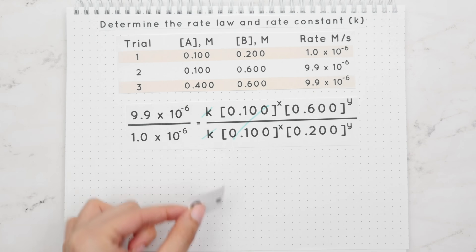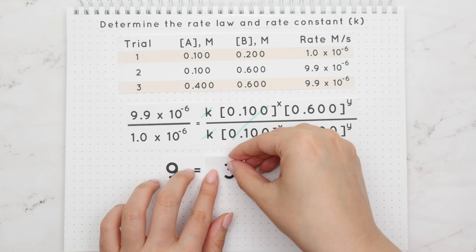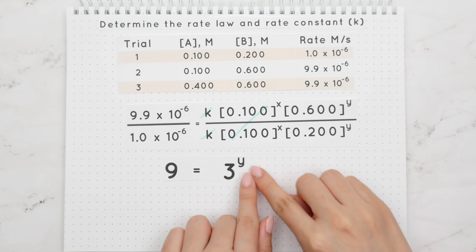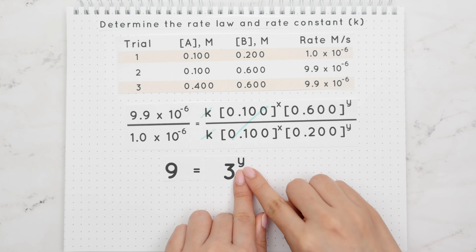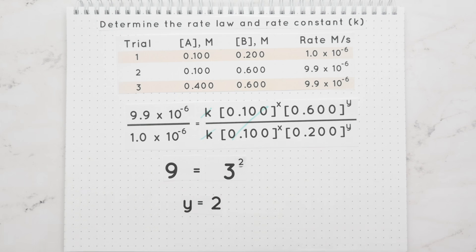When we divide the left side we get 9, and when we divide 0.6 by 0.2 we get 3. That 3 still has an exponent of y, and since 3 squared is 9, then y is equal to 2.